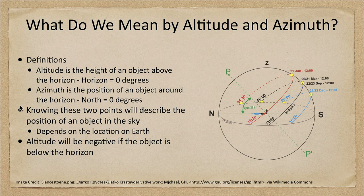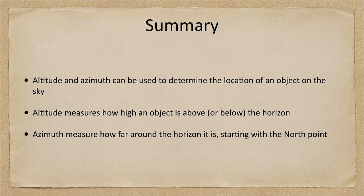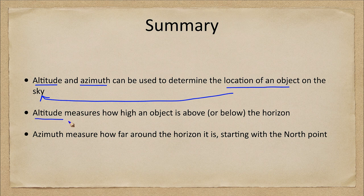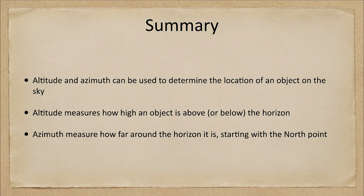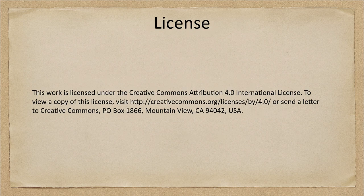So let's summarize what we've gone over. Altitude and azimuth are things that can be used to determine the location of an object in the sky. Altitude measures how high an object is above or below the horizon, and azimuth measures how far around the horizon it is, starting with the north point. The north point is the starting point for azimuth, and the horizon is the starting point for altitude. That concludes this lecture on altitude and azimuth. We'll be back next time for another special topic in astronomy — until then, have a great day everyone, and I will see you in class.